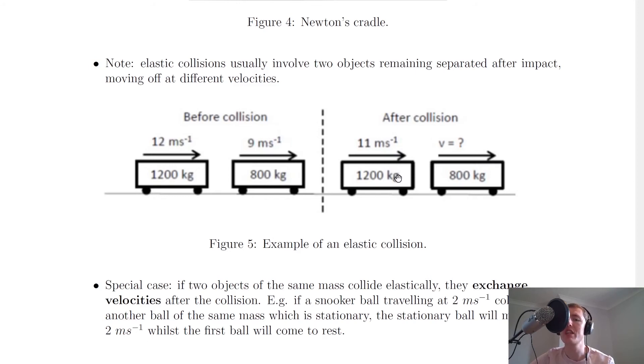But then after the collision, you can see that the 1,200 kilogram trolley has actually lost a bit of velocity, whereas we would then expect the 800 kilogram trolley to gain a bit of velocity because we're saying that momentum and kinetic energy are conserved, remember? So when you see questions in higher physics about elastic collisions, you'll typically see them look something like this.